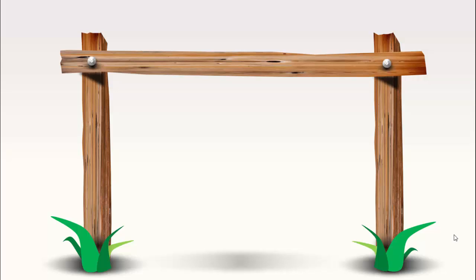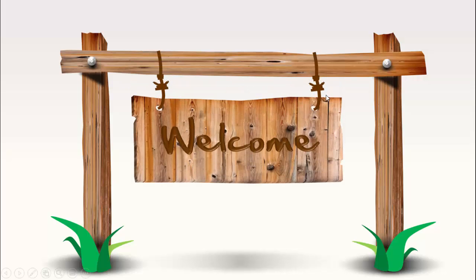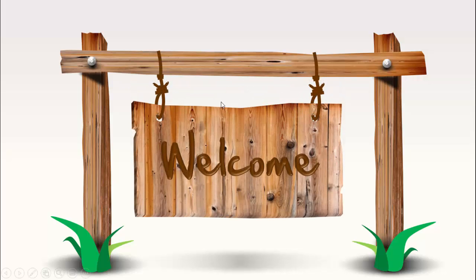In today's tutorial I'm going to show you how to create a wooden signboard infographic slide in PowerPoint. I've added a wooden frame with two vertical wood pieces and one horizontal, with some shadow and a small grass effect. When you click, you can see a rope comes which is hanging, and then a big wooden block with the text 'Welcome' — you can add any text as per your requirement. I have created two slides, one with animation and one without.